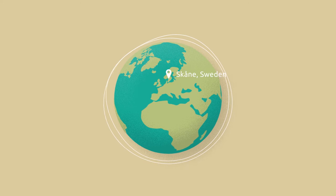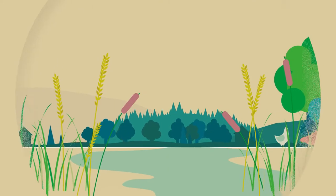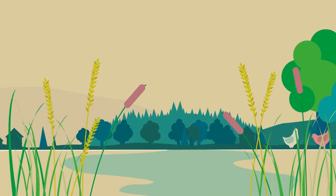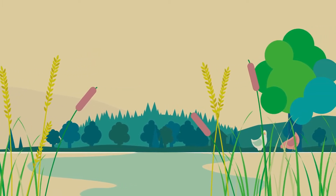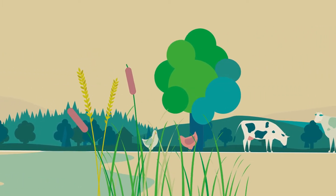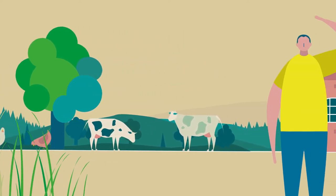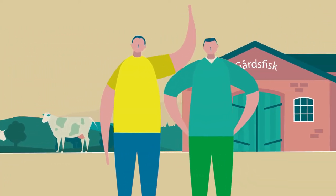In the flat countryside of Skåne in South Sweden, two young men are reforming traditional farming. They transformed a vacant barn which formerly housed pigs, sheep and cows to a fish farm named Gortsfisk.